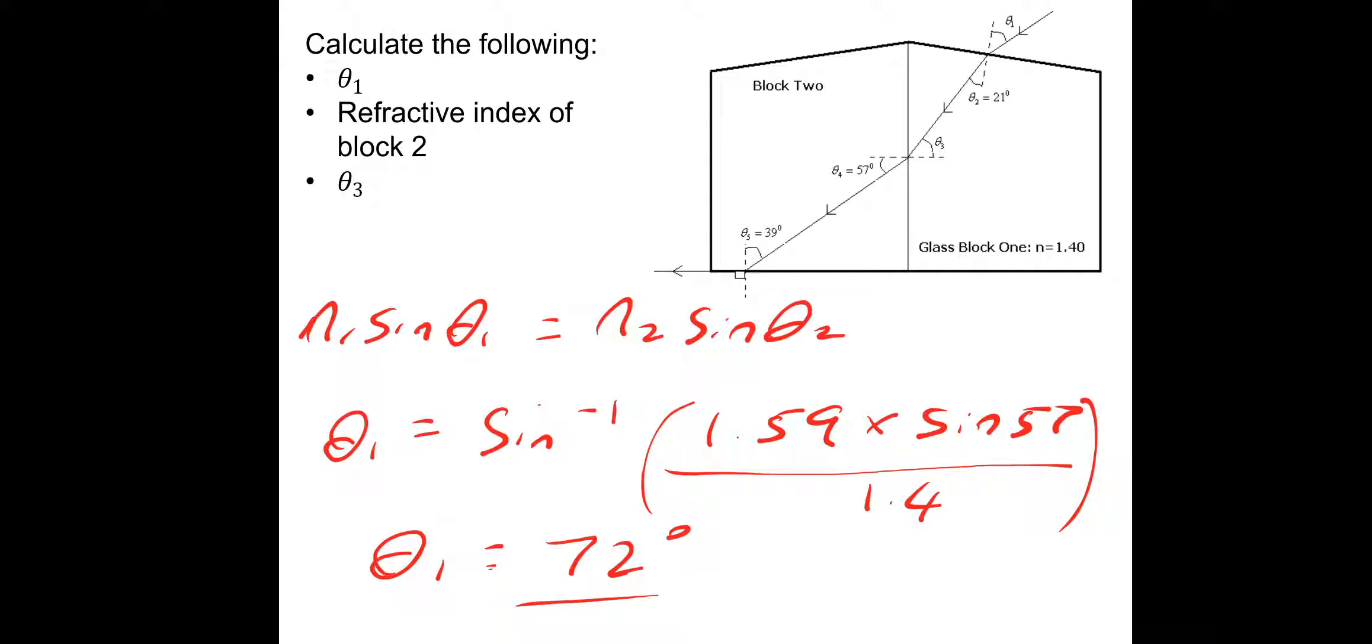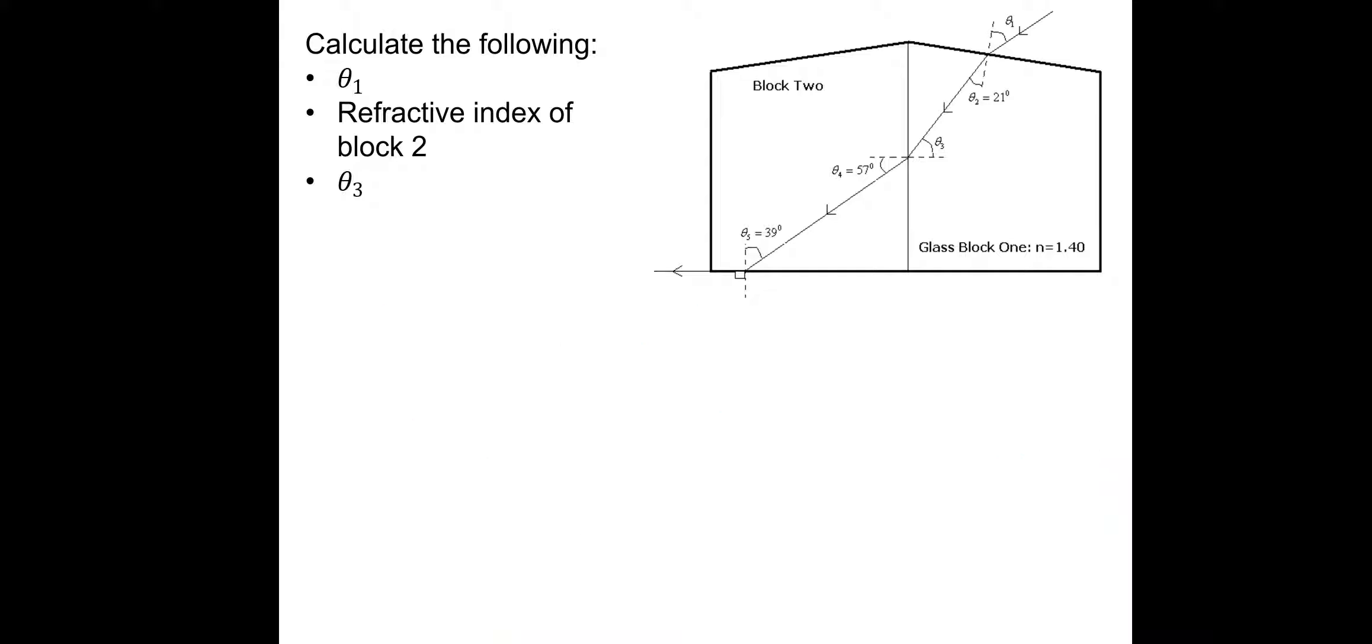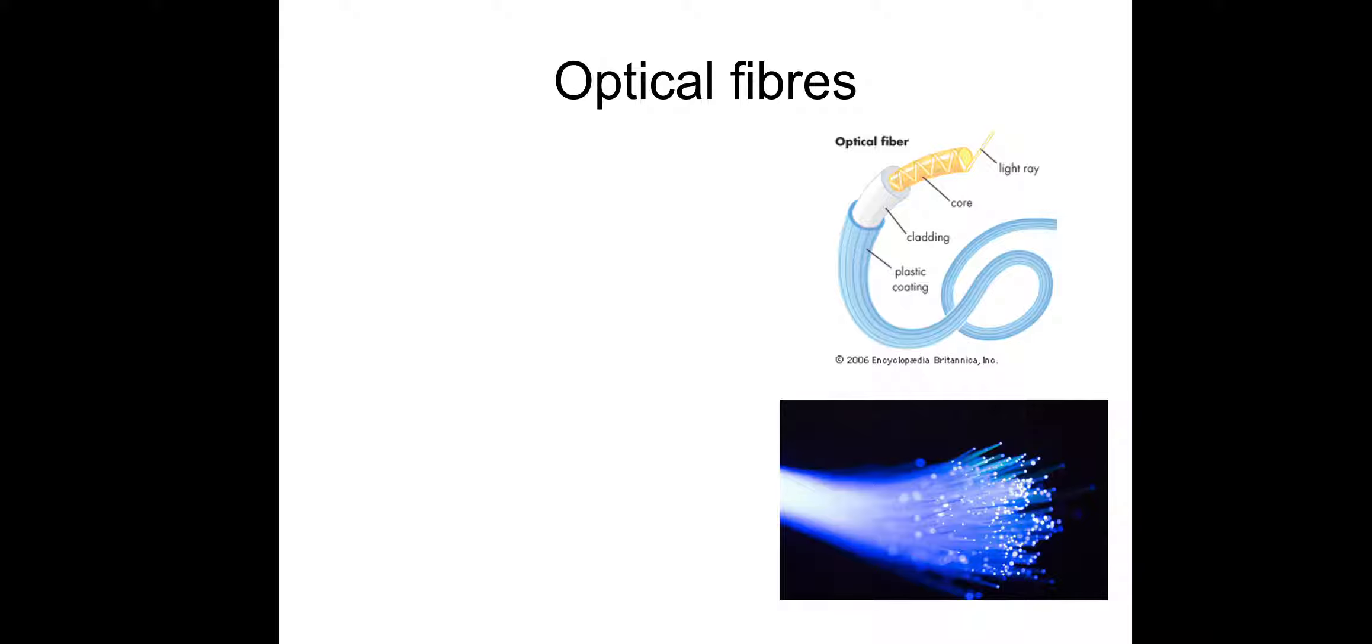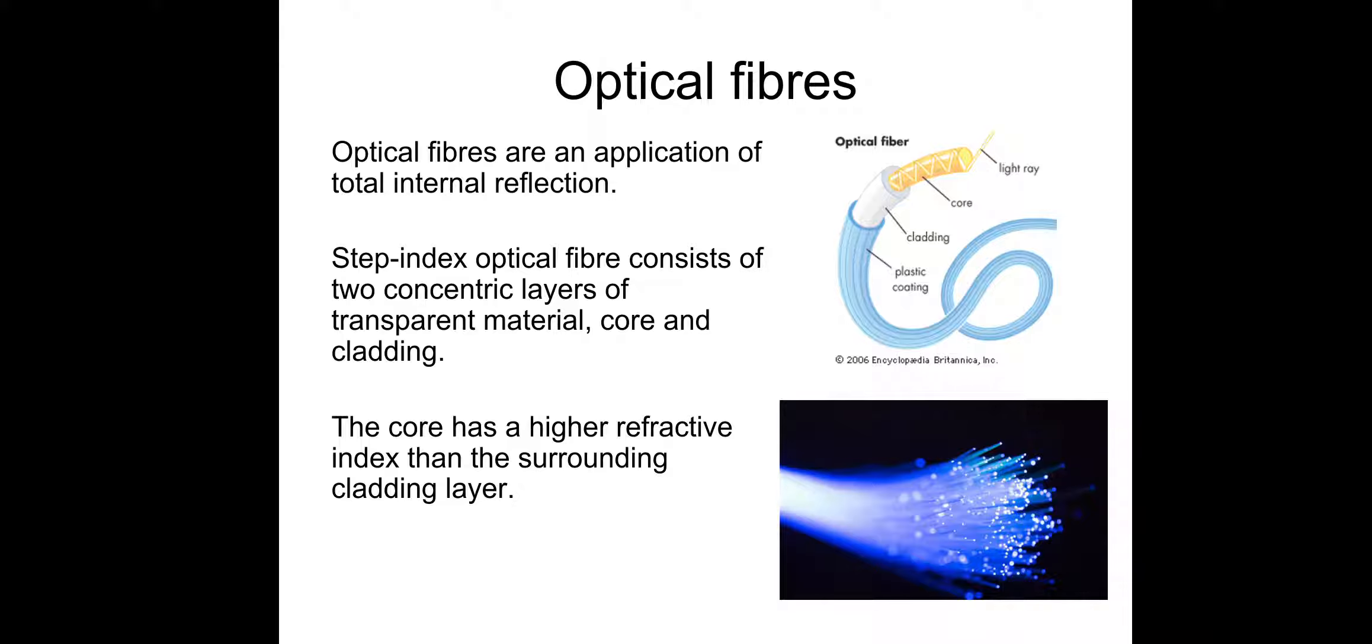Let's move on. We've got a bit more, some new information and another question. So optical fibers. Optical fibers are an application of total internal reflection. Step index optical fiber consists of two concentric layers of transparent material. We've got a core and a cladding, as shown in this Encyclopedia Britannica image on the right. So there's a core, a cladding, and a plastic coating. And as you can see, the light ray travels down the core. So the core, this is important, has a higher refractive index than the surrounding cladding layer. Very important, this bottom bit.